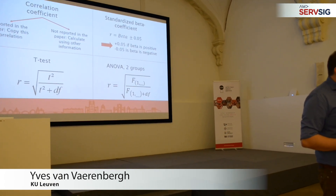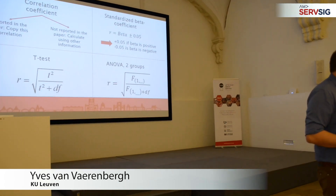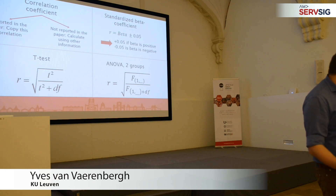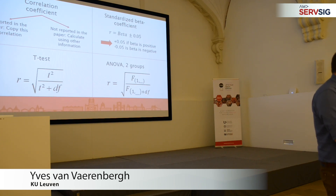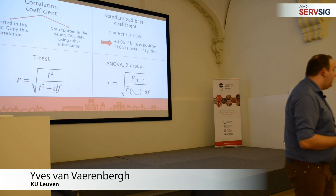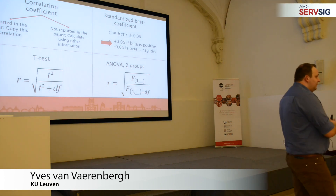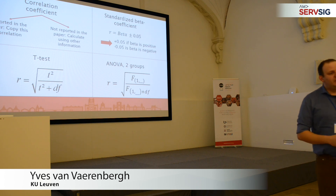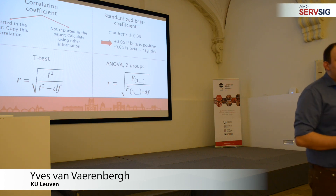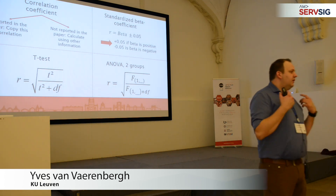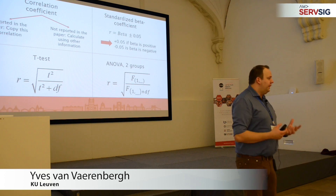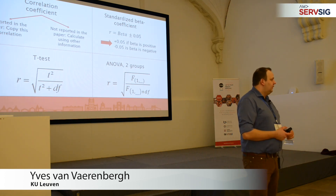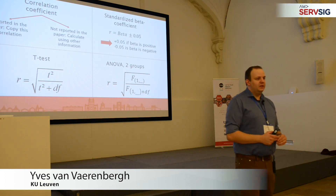But if you have a chi-square test, you can convert a chi-square into a correlation coefficient. You can also convert a p-value into a correlation coefficient. If you ever encounter that problem, just send an email, because in that case we can provide you with the exact formula — it's a little bit more complicated.